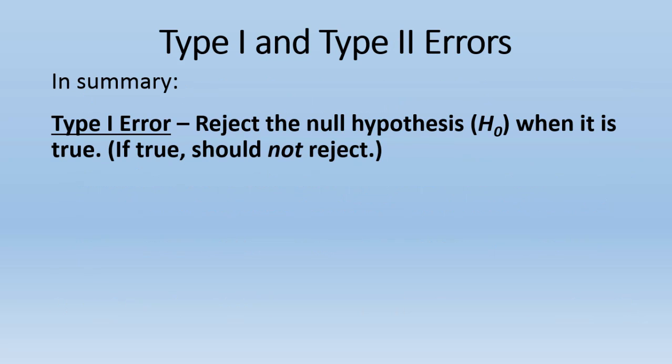So in summary, the Type I error, once again, is you reject the null hypothesis (H₀) when it is true. And if it's true, we should not reject it. That's why it's an error.